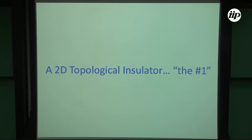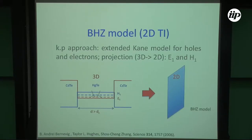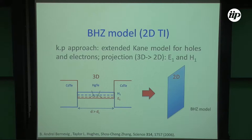There's a model that describes this — the so-called Bernevig-Hughes-Zhang (BHZ) model. That was the first proposed 2D topological insulator. It's cadmium telluride / mercury telluride / cadmium telluride — a quantum well. It's what they call a type-3 quantum well, in which the bottom of the conduction band overlaps with the top of the valence band. Usually if you have things like GaAs/AlGaAs, this cannot happen. This inversion only happens in this kind of material because of the inversion I showed you in bulk.